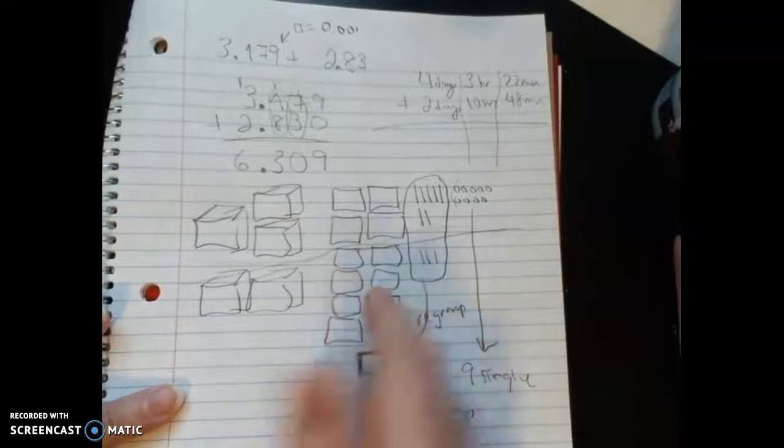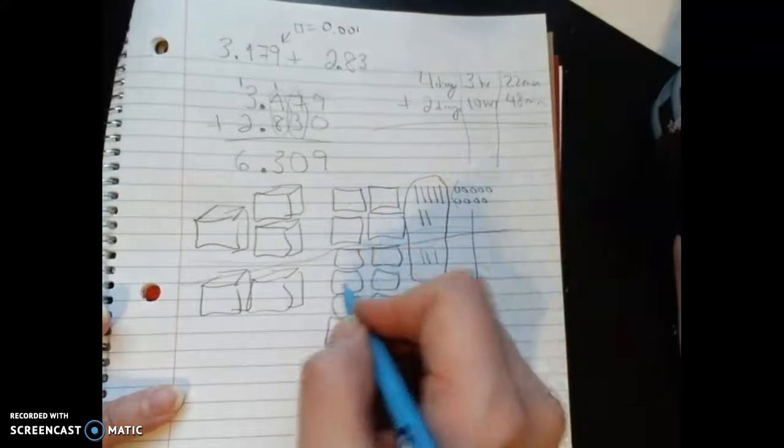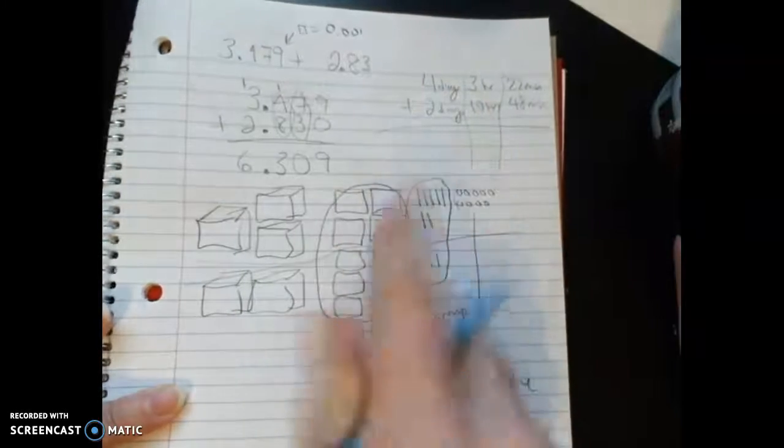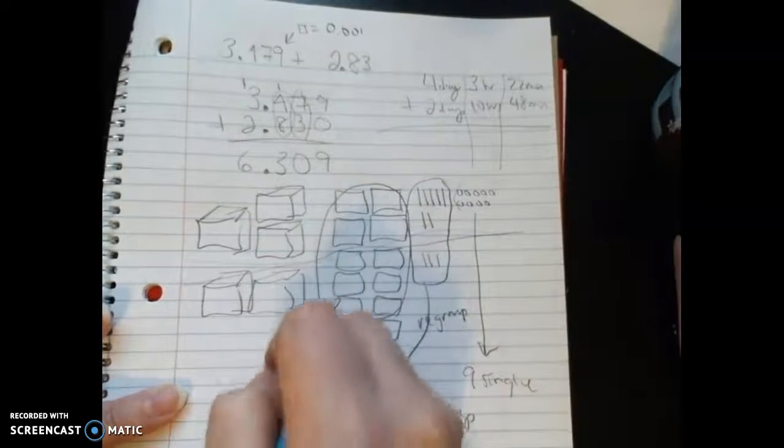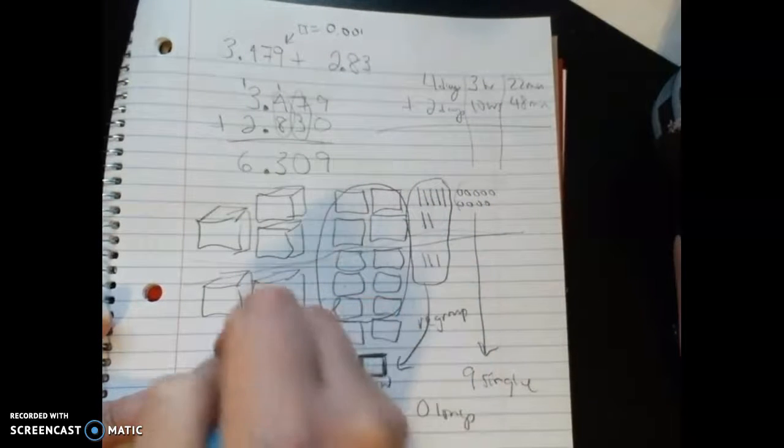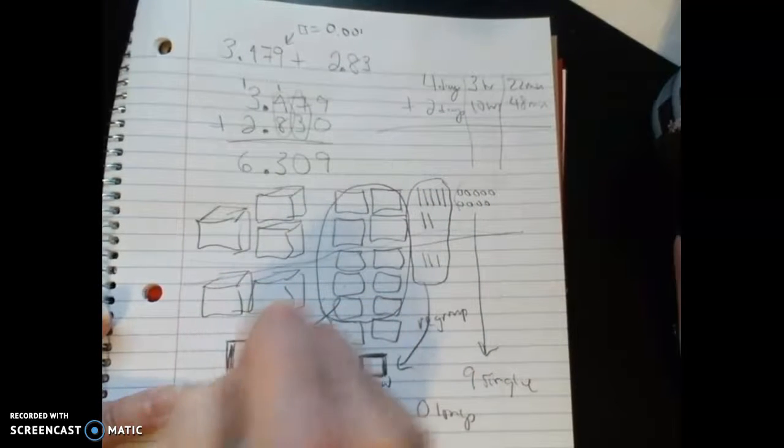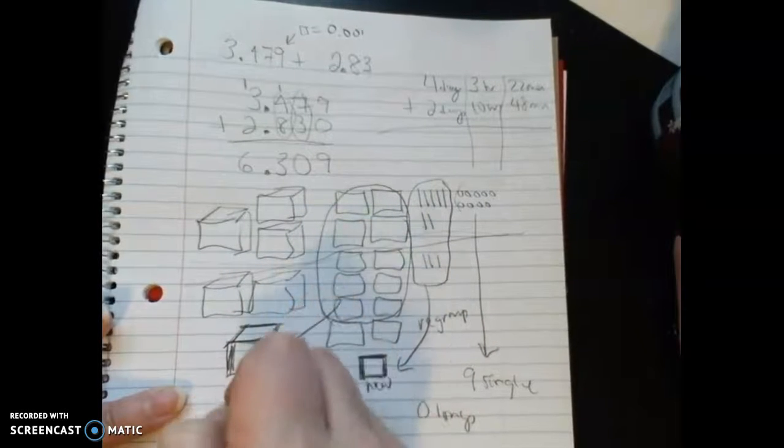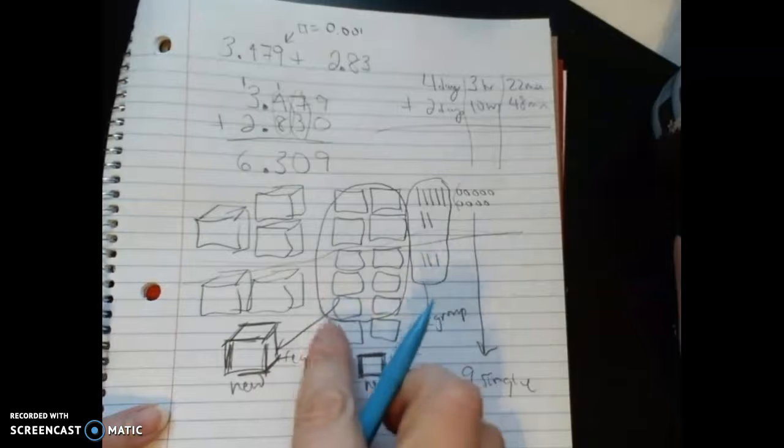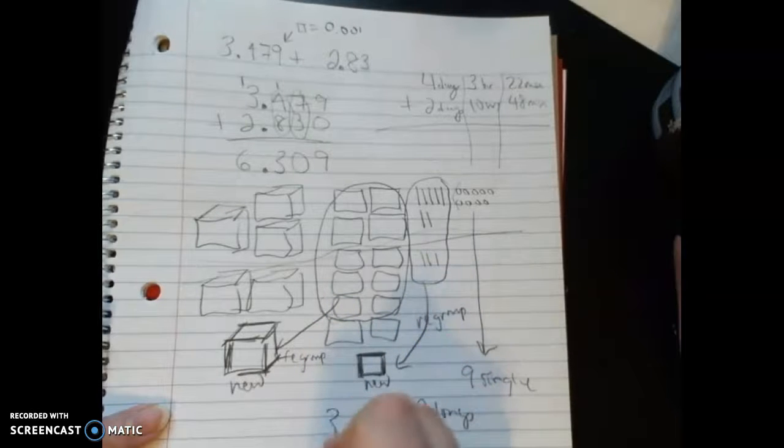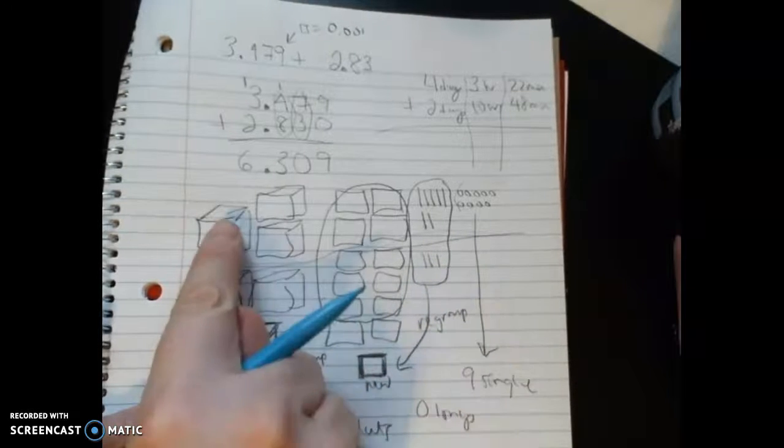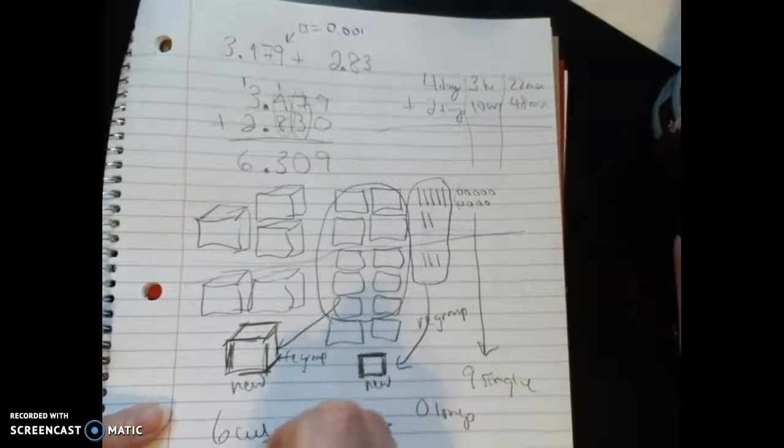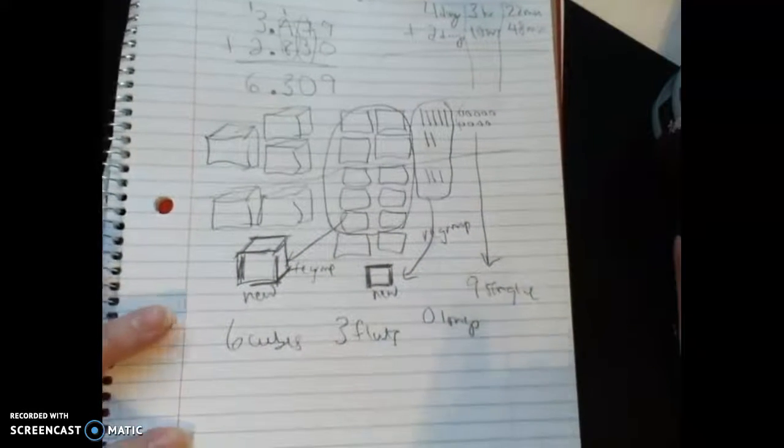When I look at my flats, I have 1, 2, 3, 4, 5, 6, 7, 8, 9, 10. So 5 plus 5 is 10, and I'm going to regroup and make a new cube. There's 1, 2, 3 flats left, and then I have 3, 4, 5, 6 cubes.